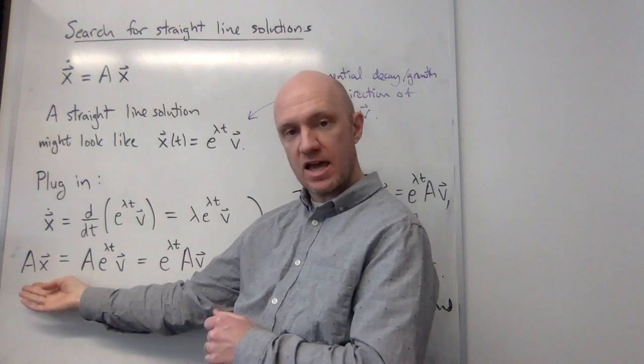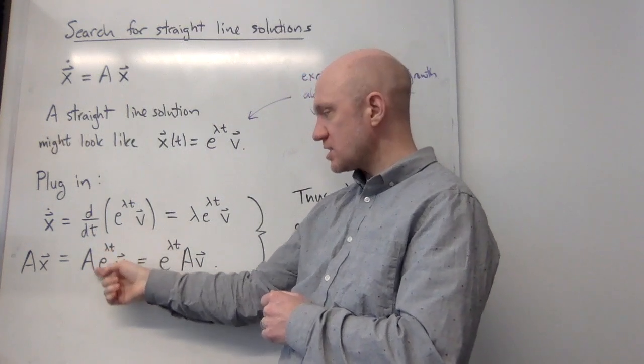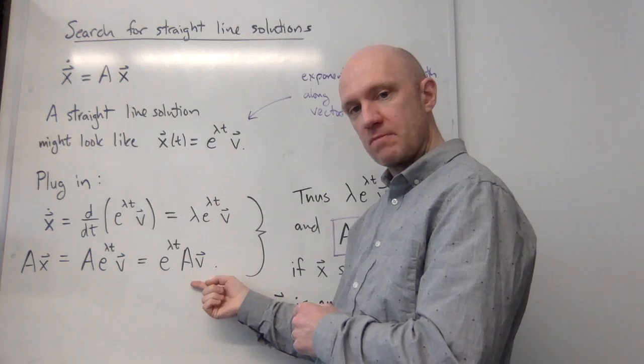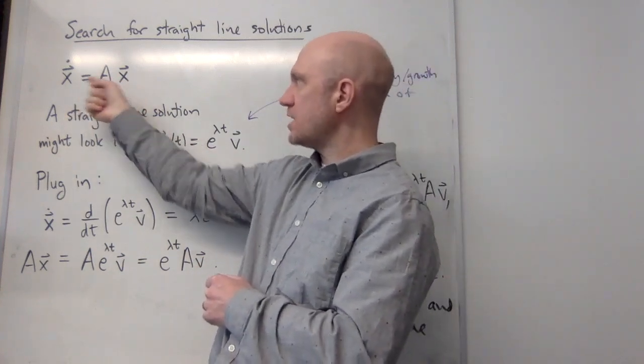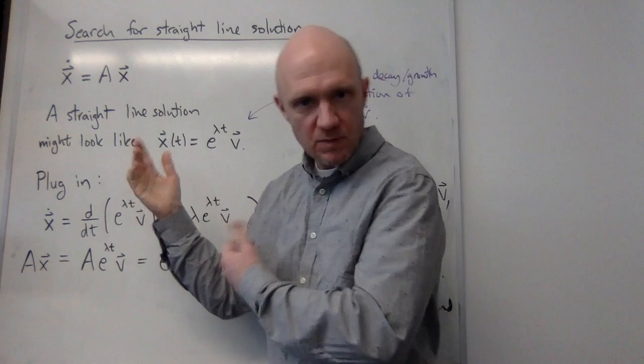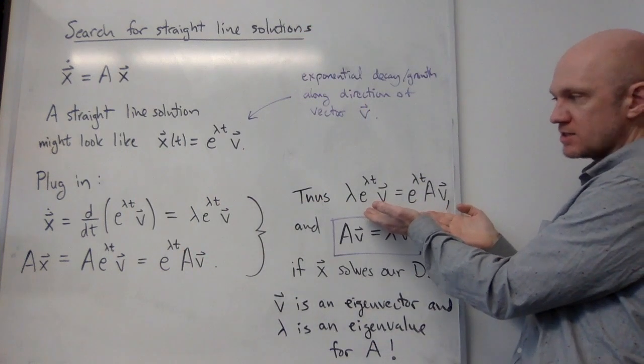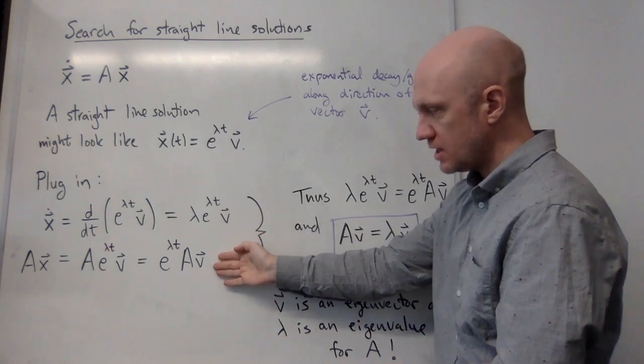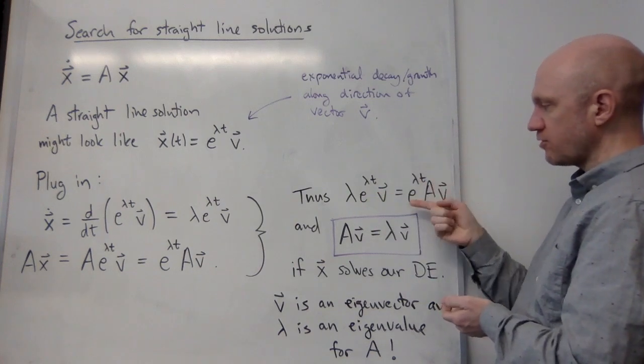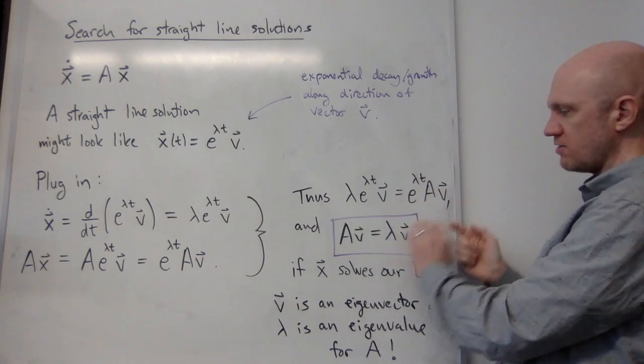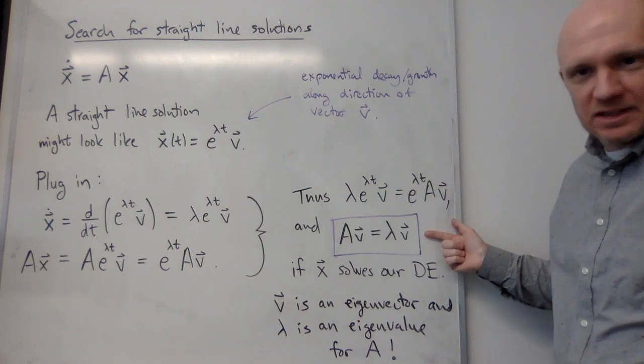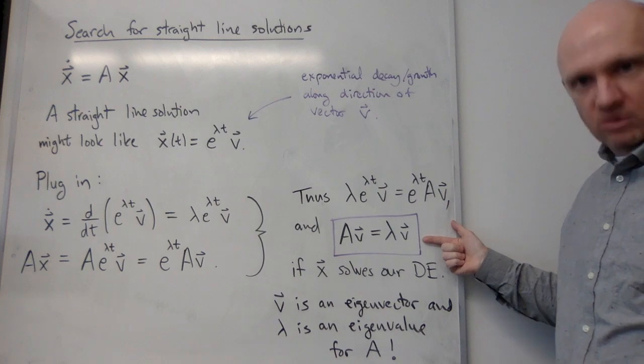Okay, what's on the right hand side? Well, that's just Ax. That's A times e to the lambda t v. This guy is a scalar. It's just a number and so it can come out of the whole product. So I have e to the lambda t times Av. Okay, great. So I've evaluated both sides of this equation for the hypothesized form of a straight line solution. Let's see what happens. I'm going to equate the two sides. Okay, so I know that lambda e to lambda t v is equal to e to the lambda t Av. That means these two guys are equal. Now e to the lambda t is never zero, so I can cancel it off of both sides and I end up with an equation which looks like lambda v equals Av. Or if I write it this way, it's Av equals lambda v. This hopefully looks a little bit familiar.